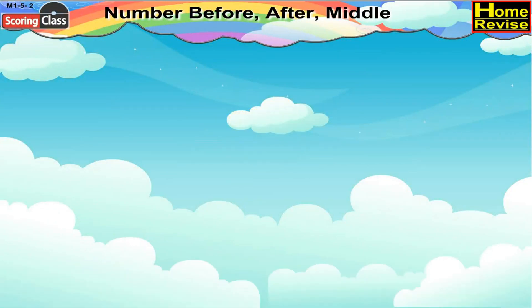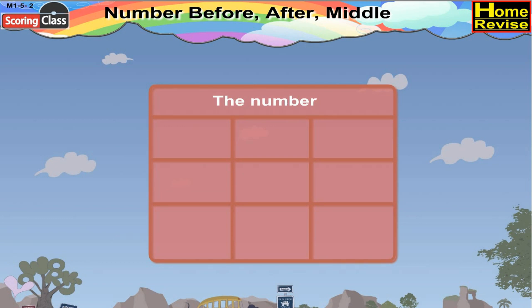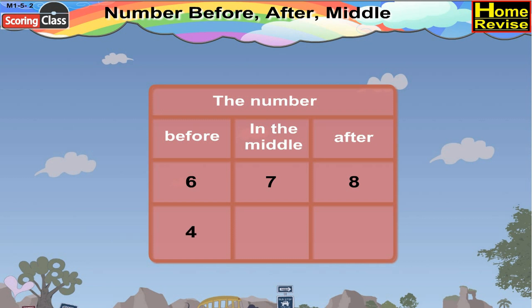Well, let us see this chart. The numbers. Now it has 3 columns: before, in the middle, after. If you notice, 6 is the number before 7 and 8 is the number after 7 and 7 is the middle number between 6 and 8. In the next row, 4 is the number before 5 and 5 is the middle number. Now, similarly, we will fill the chart. 2 is written in the middle. Let us see what comes before — it is 1, so write 1 over there. And what comes after 2? It is 3, so write 3 in the after column.